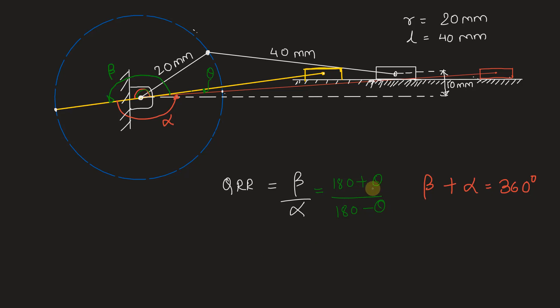Now our job is to find out theta. If we find theta, we will be able to find out the quick return ratio. Now in order to find theta, we'll have to first find out the angle made by the yellow line with the baseline - let that be phi 1 - and the angle made by the red line with the baseline - let that be phi 2. Theta is nothing but angle phi 1 minus phi 2. So theta is equal to phi 1 minus phi 2.